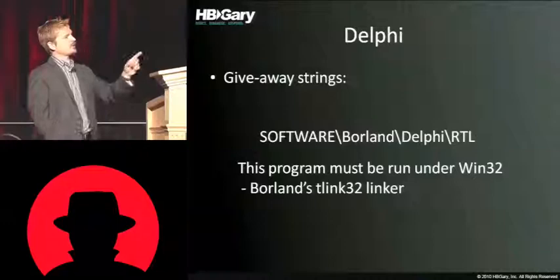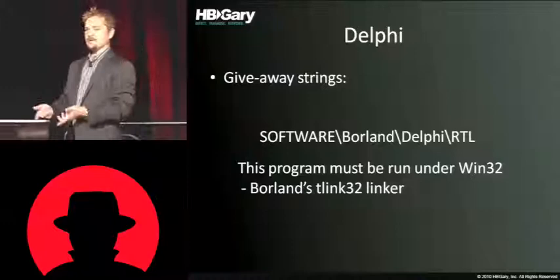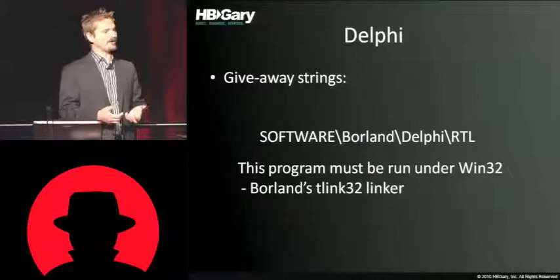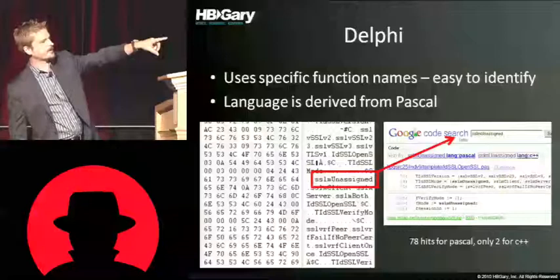If you see this particular string, you know you're dealing with Delphi — it's always in there. If you see 'This program cannot be run in DOS mode' you're dealing with a standard linker, but if instead you see 'This program must be run under Win32,' you're dealing with Borland's TLINK32 linker — that means the guy wrote it in Delphi. This is very, very common. Lots and lots of malware is coming out in Delphi; I don't exactly know why it's so popular, but people really like it.